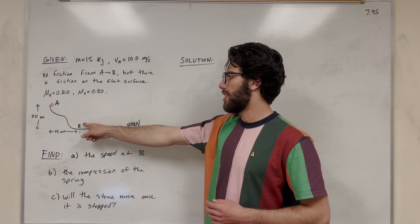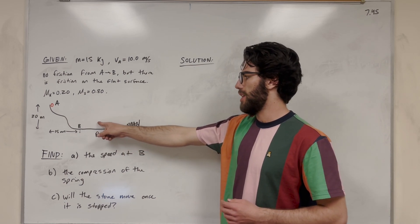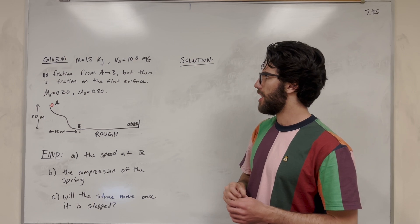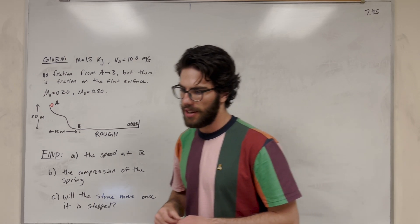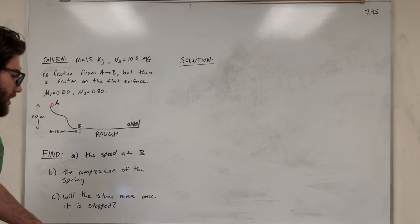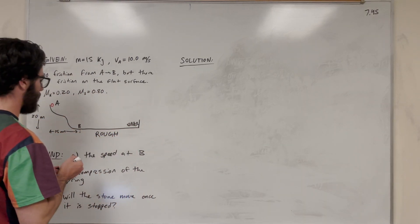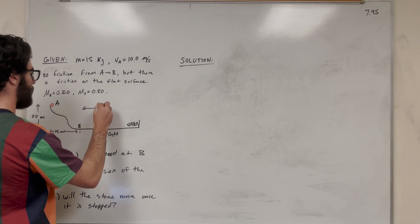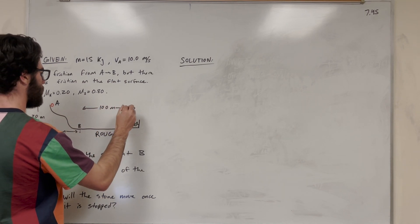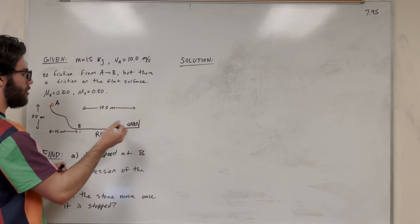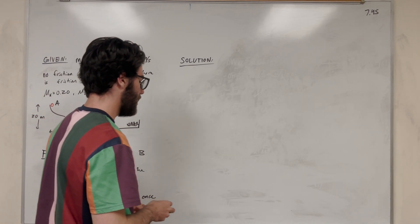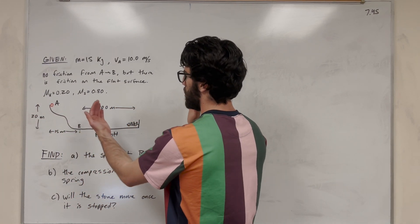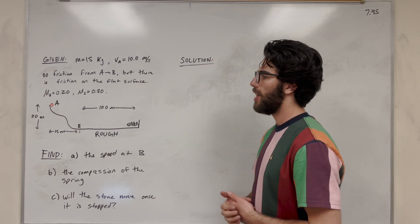That moving rock is going to travel from B to the spring — this distance is 100 meters. So it travels 100 meters until it reaches the spring, and it's going to compress that spring. We're going to find how much the spring gets compressed due to that velocity.